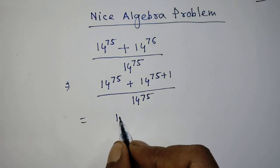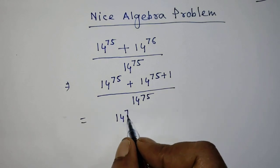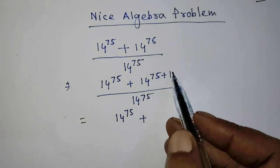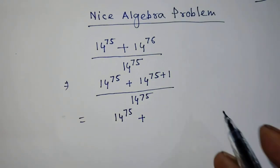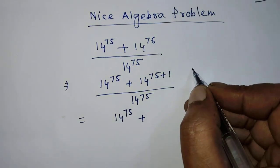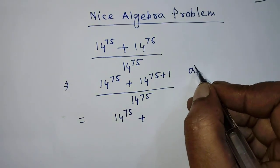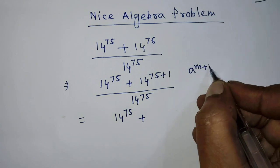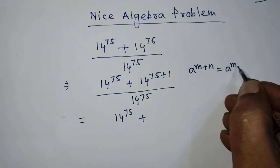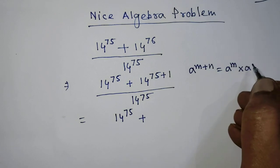After that, we write 14 to the power 75 plus. To simplify this exponential form, we have to apply the formula: a to the power m plus n equals a to the power m times a to the power n.